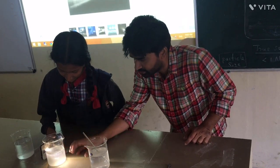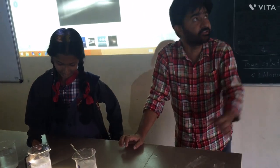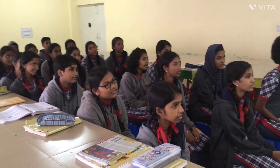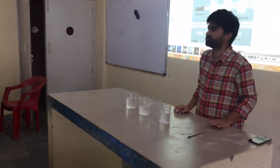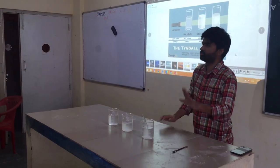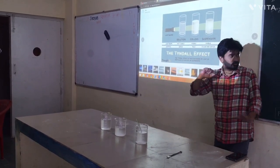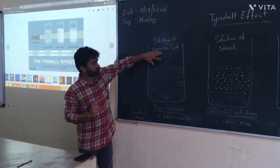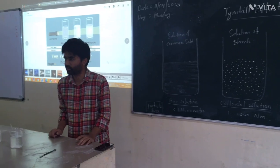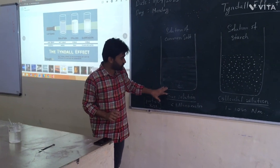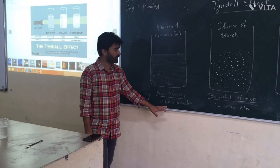From the side it will be like a glowing lamp. There is one other property — that is the Tyndall effect. We will see how the Tyndall effect will occur. This is the solution of common salt — sodium chloride. If we form a true solution, the size of the particles are less than 1 nanometer.